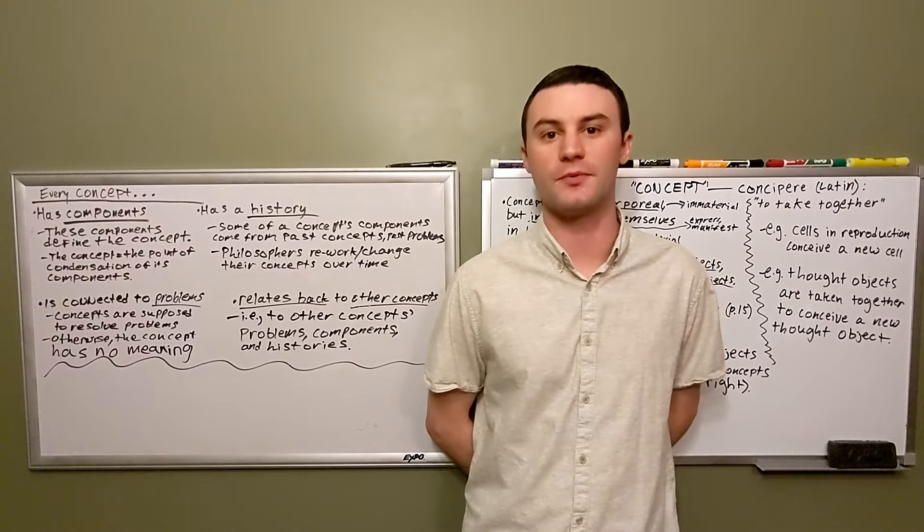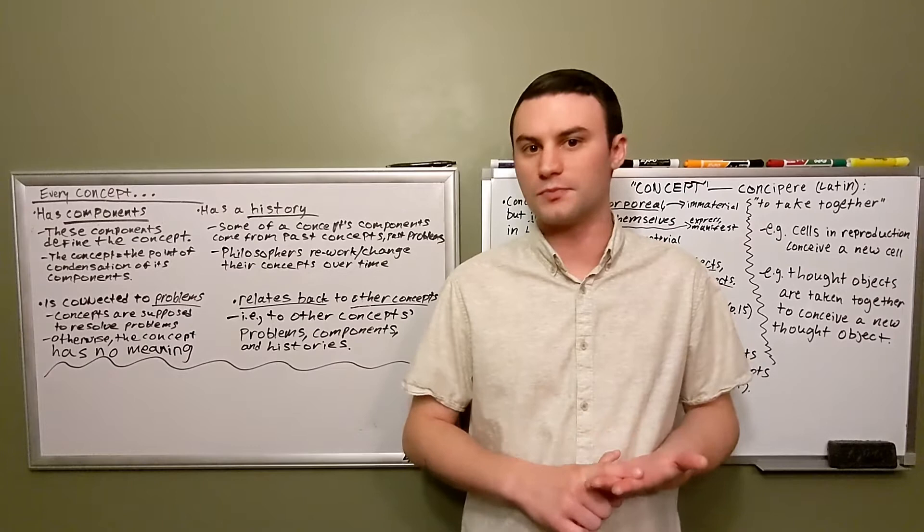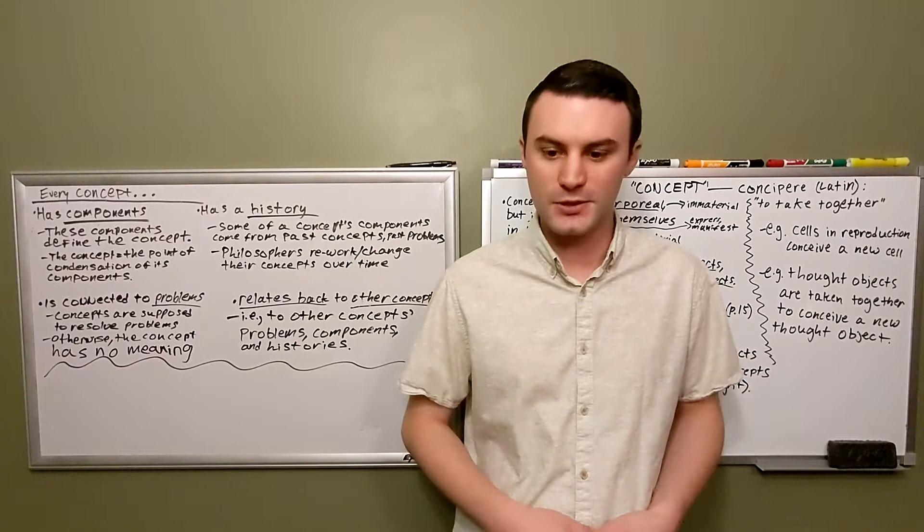There are four main attributes of concepts that emerge in the first half of chapter one. Deleuze and Guattari tell us that every concept has components, every concept has a history, every concept is connected to some problem that it's supposed to address, and finally every concept is in turn related to other concepts.